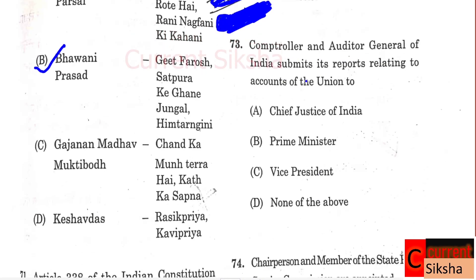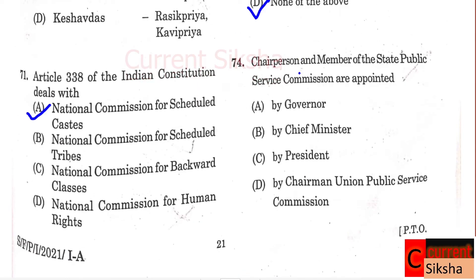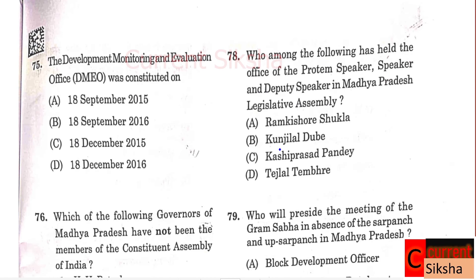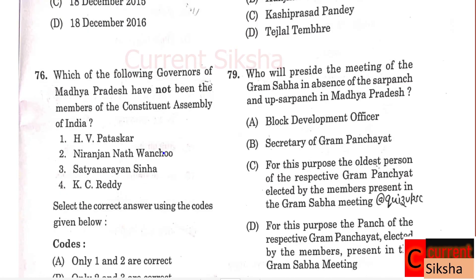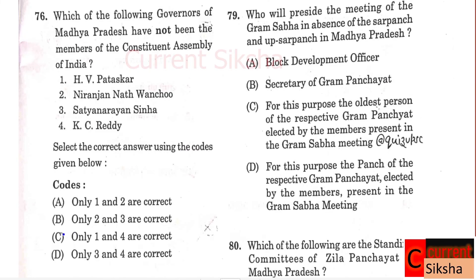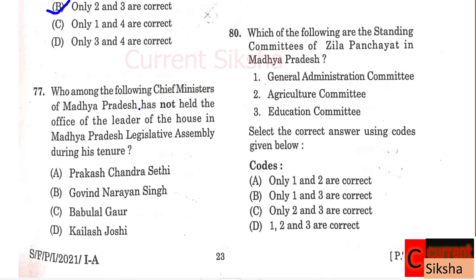Question 73: Comptroller and Auditor General of India submits its report relating to the accounts of the Union to? Correct option D - Nanadev. Question 74: Chairperson and members of the State Public Service Commission are appointed by Governor. Correct option A. Question 75: The Development, Monitoring and Evaluation Office was constituted on? Correct option A - 18 September 2015. Question 76: Which Governor of Madhya Pradesh has not been a member of the Constituent Assembly of India? Correct option B - 2 and 3: Niranjan Natsh Banchu and Anant Narayan Sinha. Question 77: Which Chief Minister of Madhya Pradesh has not held the office of Leader of the House in the Legislative Assembly? Correct option B - Govind Narayan Sinha.